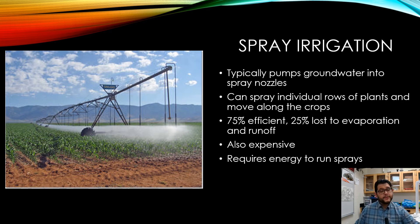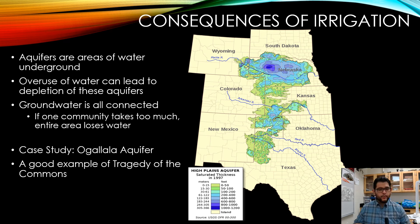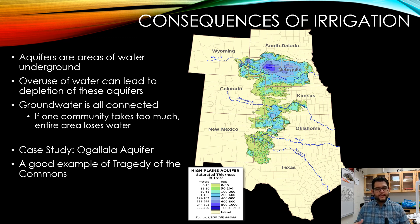Every irrigation method has positives and downsides, and that's something you should be prepared to answer on the AP exam. One major consequence of irrigation is the depletion of aquifers, like the Ogallala Aquifer. An aquifer is an underground area where water is stored — not like a river or lake underground, but more like a wet sponge. The water is held within the rock, and we run pipes down to pump it out.